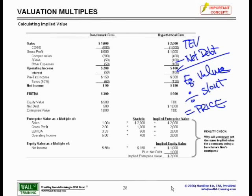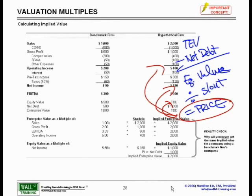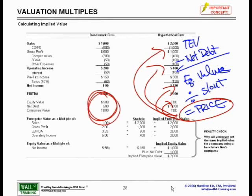Now, we also know that if you started with your price per share, you multiply by your shares outstanding to get your equity value. Add net debt, and you get your total enterprise value. That's the calculation we will do to get our benchmark firm.